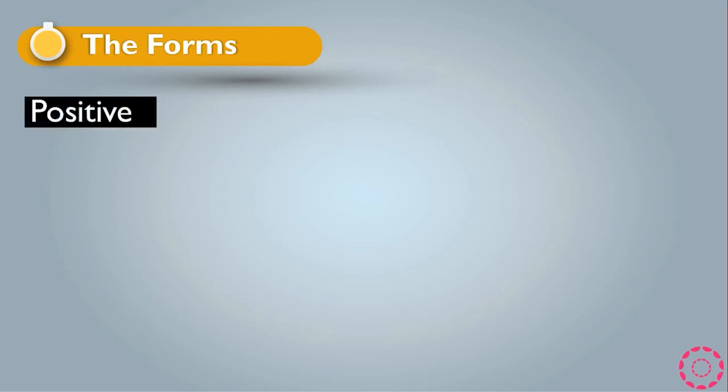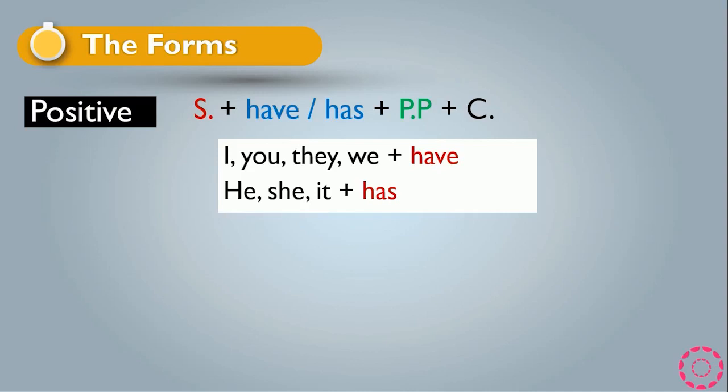Now the forms of present perfect. For positive: subject plus have or has plus past participle plus complement. We use have with the subjects I, you, they, or we. We use has when the subject is he, she, it, or any singular subject.